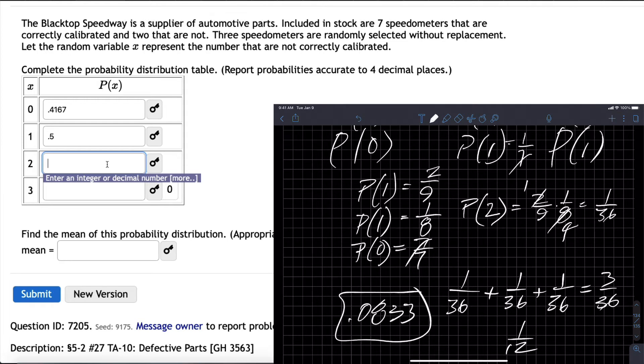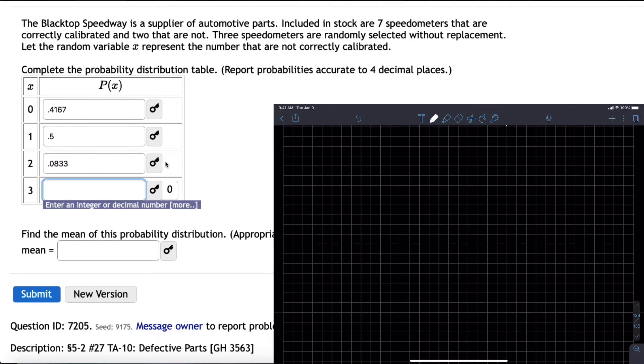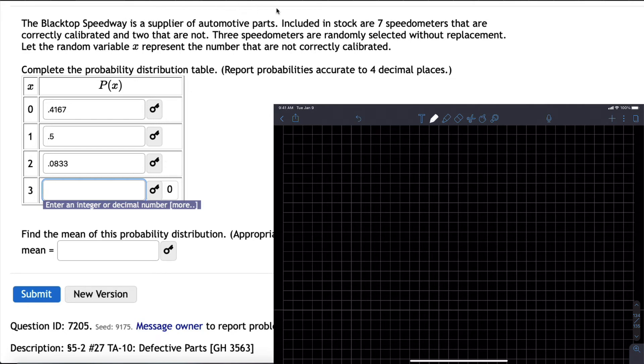There's an easier way to do that. The probability of drawing three defective speedometers is zero because there's only two of them. So that means these three options add up to one. If we have faith in our answers, we didn't have to calculate this one. We could have taken these two, added them together and subtracted them from one.